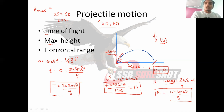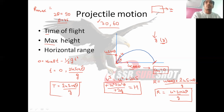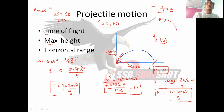Now for the application of projectile: whenever there is a moving bus or vehicle and a particle is dropped or thrown out of the window, the particle attains the velocity of the vehicle — whether it is a vehicle, helicopter, or anything else. So the velocity of the particle will be the same as the vehicle's velocity u, and from that point the motion becomes projectile motion for that particle.